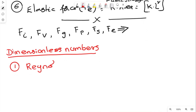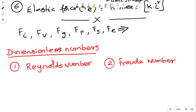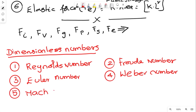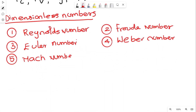The five dimensionless numbers are: number one, Reynolds number; number two, Froude number; number three, Euler number; number four, Weber number; number five, Mach number. These are the five dimensionless numbers. Reynolds number, Froude number, Euler number, Weber number, Mach number.